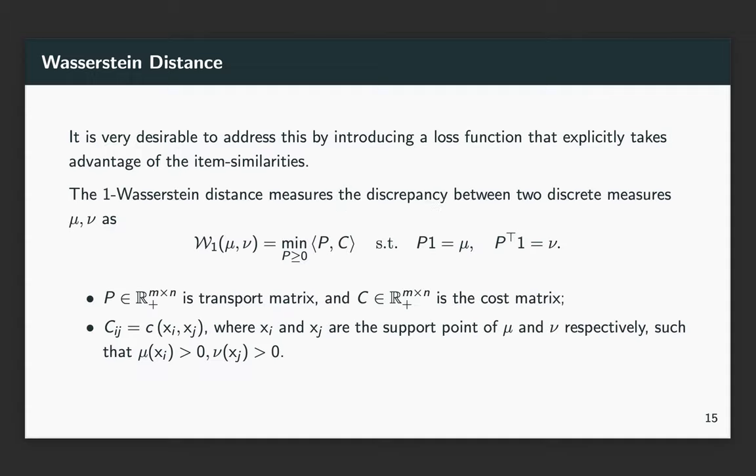Luckily, we have Wasserstein distance, which measures two discrete measures μ and ν through this linear programming formulation. Here Π is the optimized variable and C is the cost matrix. C_{ij} indicates the cost of moving one unit mass from x_i to x_j in the support of these two measures.